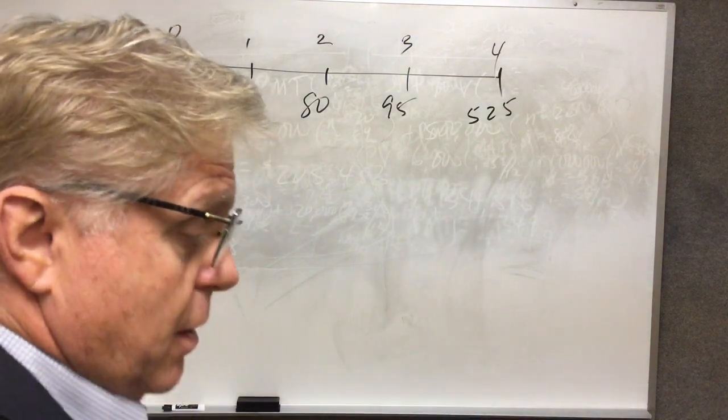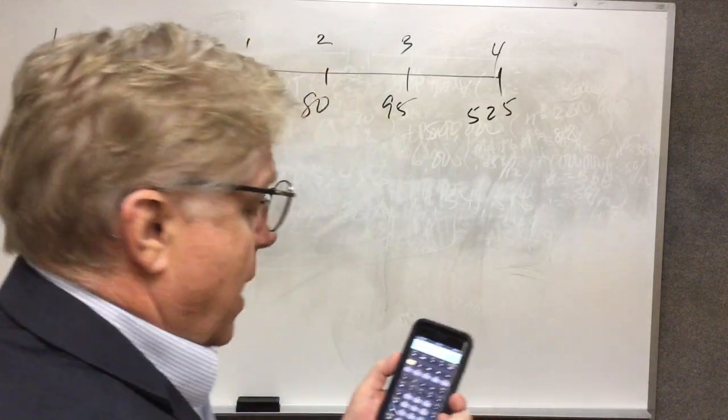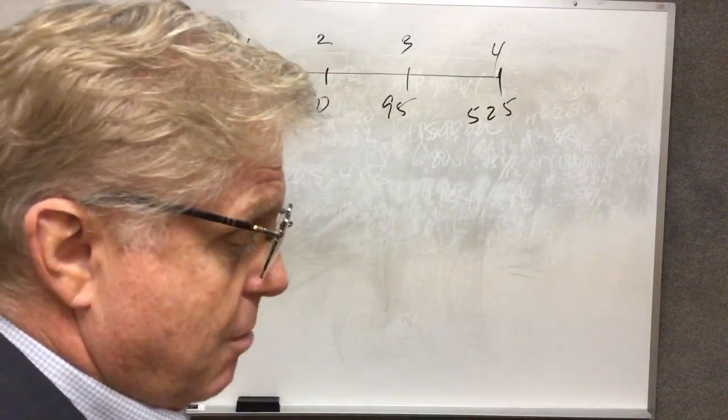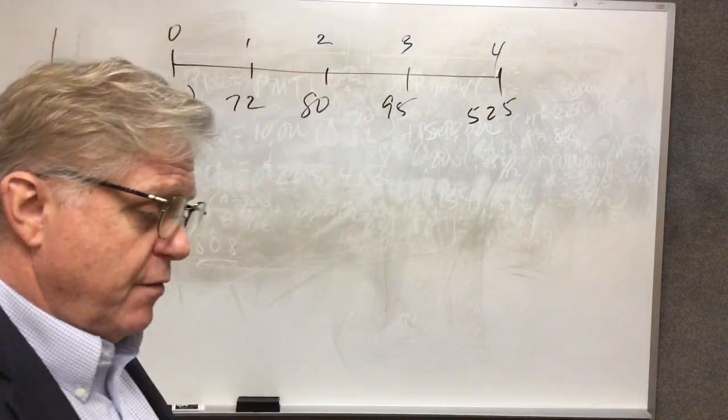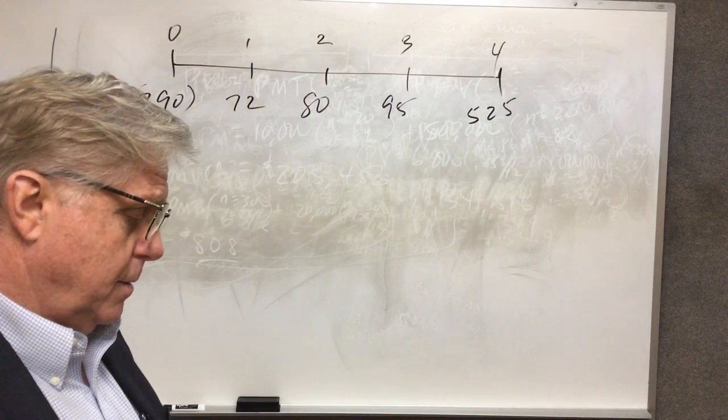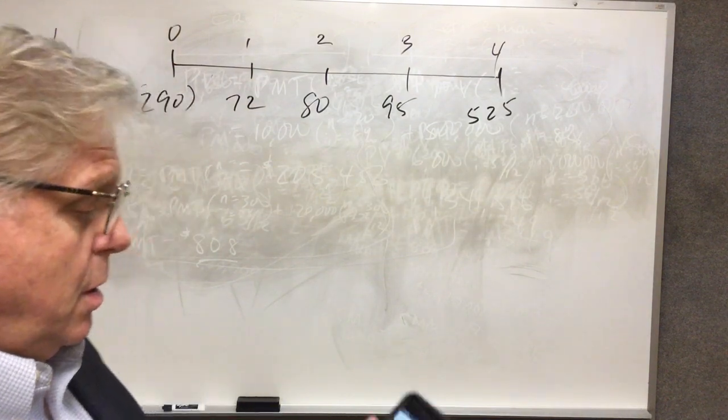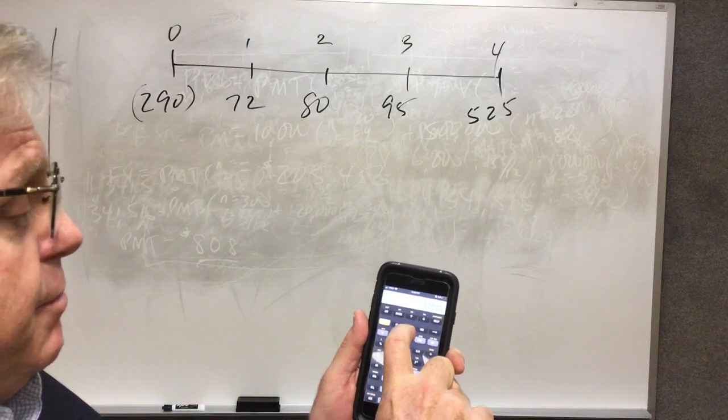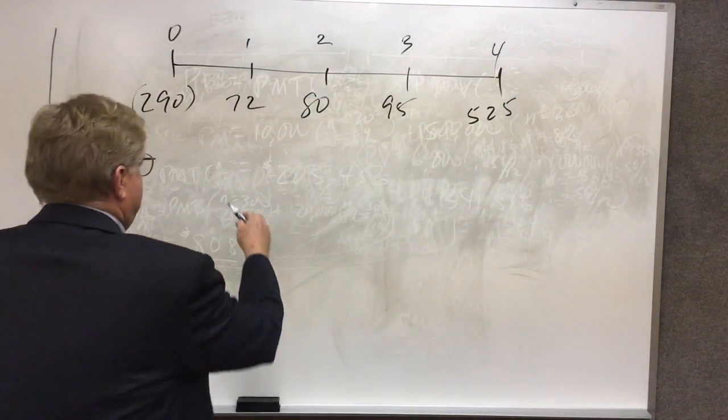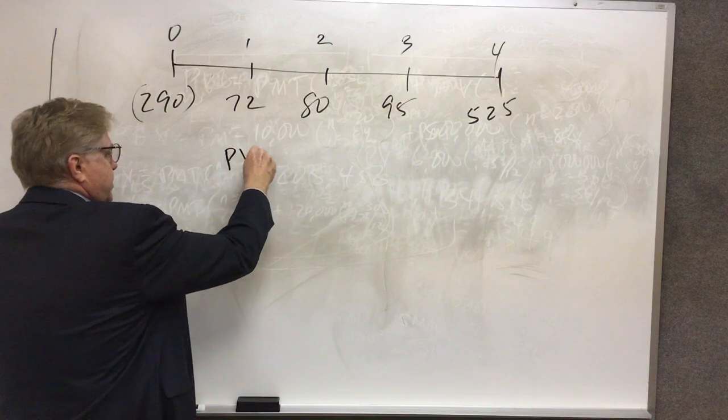And I'm going to solve for this problem first of all by the present value approach. I'm going to solve for what's called the NPV, the net present value. Net present value is defined as the present value less the initial outlay.